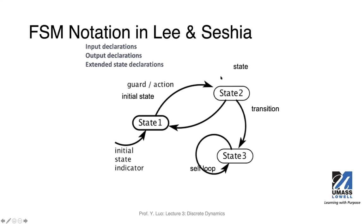We also have self loops. A self loop goes back to the same state — the state does not change, but you may still output a different value. You can still do outputs and still have a guard to describe the condition for the self loop.